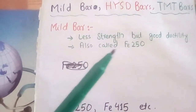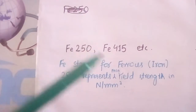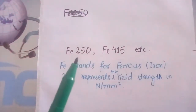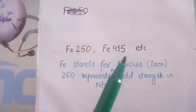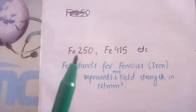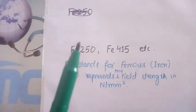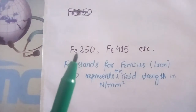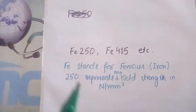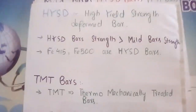Now the question is: what do Fe 250 and Fe 415 represent? Here, 'Fe' stands for ferrous, that is iron, and 250 or 415 stands for the minimum yield strength of the steel bar. So Fe 250 means ferrous iron with a minimum yield strength of 250 newton per millimeter square.